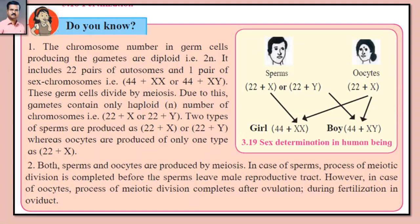Both sperms and oocytes are produced by meiosis. In the case of sperms, the process of meiotic division is completed before the sperms leave the male reproductive tract. However, in the case of oocytes, the process of meiotic division completes after ovulation during fertilization in the oviduct. Manje, shukranu aani andapeshi hi doni yugmake ardhasutri vibhajanane tayaar hotaat. Shukranuanche avapti te, urashanamadhun baahir padnyaapoori tiyanche ardhasutri vibhajanachi prakriya purna hote. Paranthu, andapeshibaabat ardhasutri vibhajanachi prakriya andashayatun baahir padlyaanantara, andanalikemadhe phalanaaveli purna tvees jaate.